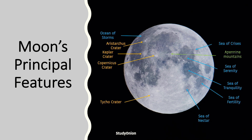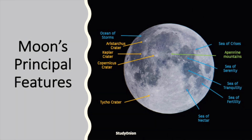Let me just mention that the only features you need to identify for this specification are the Tycho, Copernicus, and Kepler craters, the Sea of Crises, the Ocean of Storms, and the Sea of Tranquility, and the Pennine Mountain Ranges. These are the features in the specification, but I have given some other features which would be good to learn as other reference points, because sometimes only half the moon is given with exam questions, and it can be difficult to identify those.